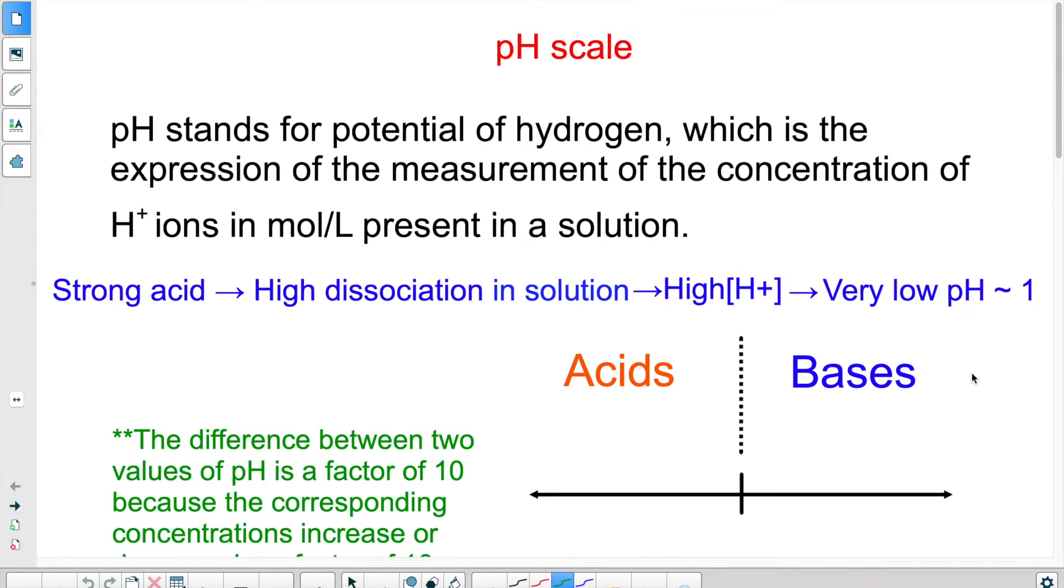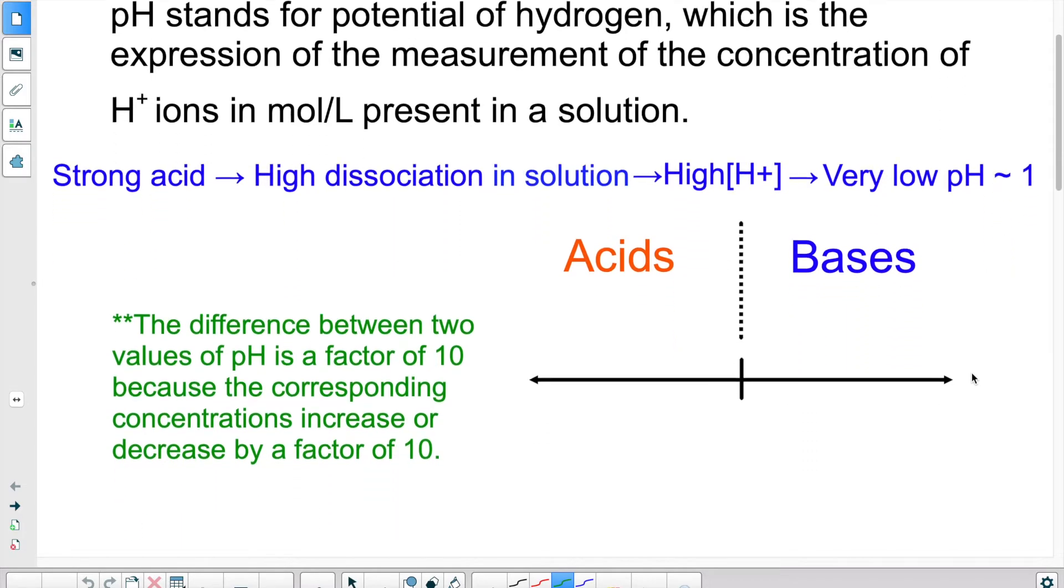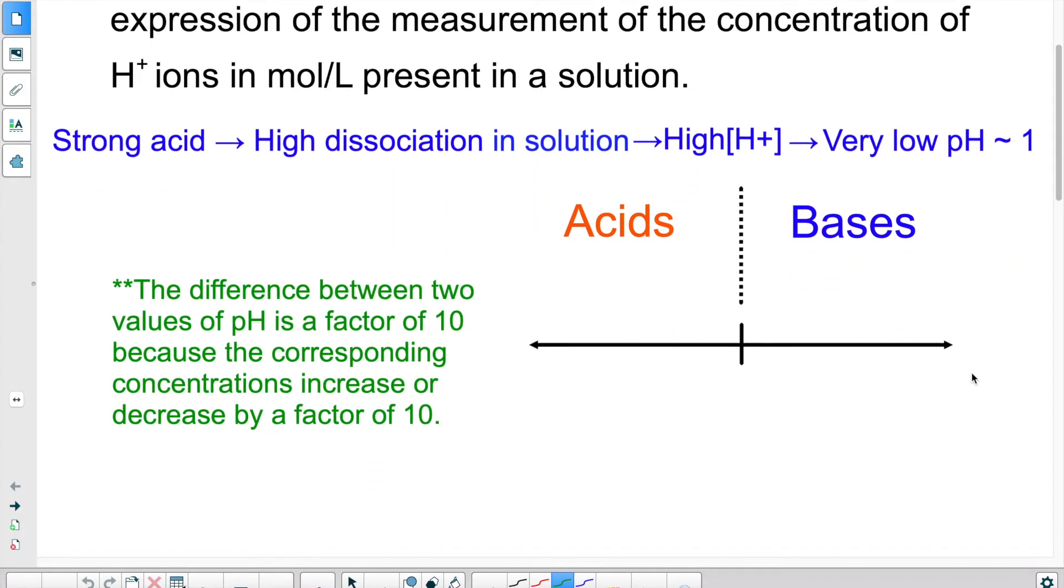Now I want to clarify something. We are used to seeing a scale that goes from 1 to 14. Now there are various pH scales. That is the most common one, but you have some that go from 0 to 14. Some even go into the minuses. We rarely ever use those.